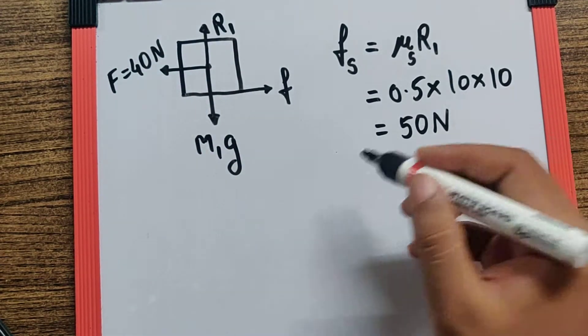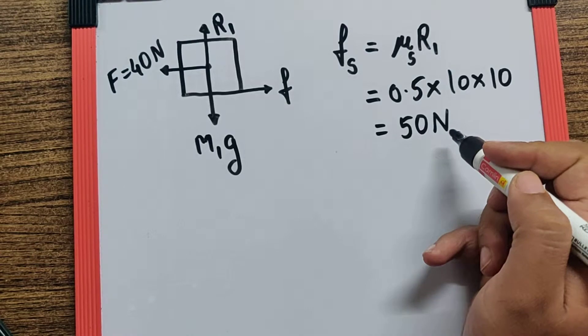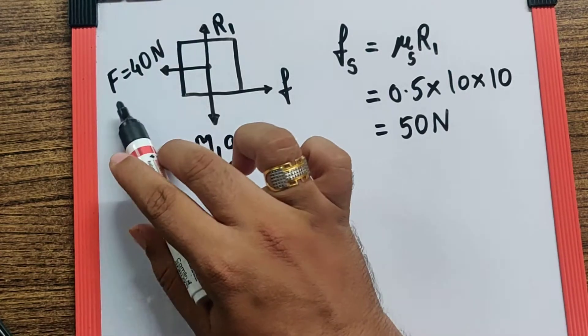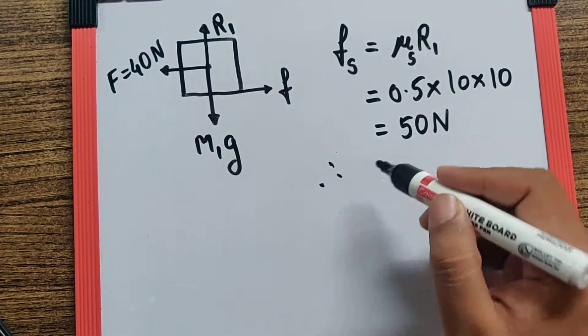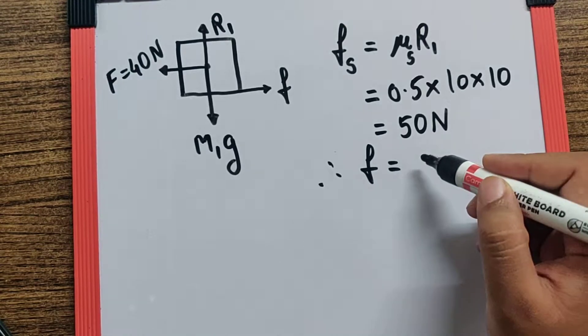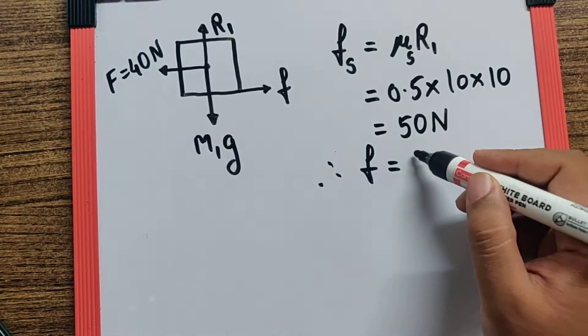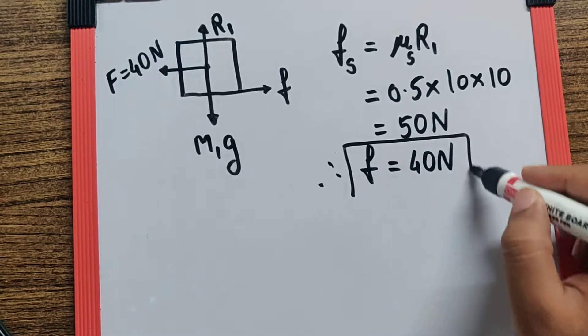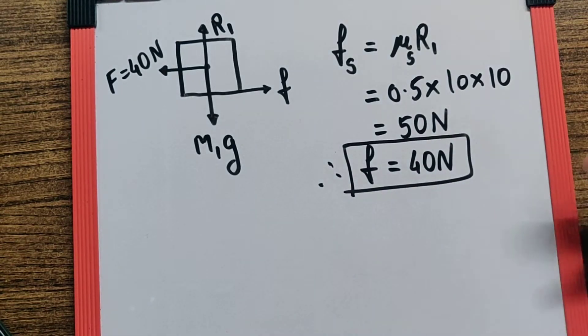So here I can say the maximum possible friction force is 50, but the required is only 40. Therefore, the friction acting on the block due to the slab is going to be 40 newtons. Now once you understand this, you should go for the free body diagram of the slab.